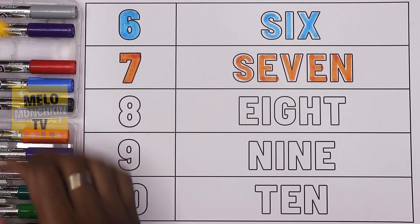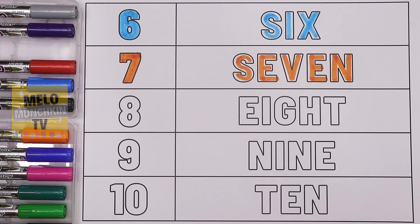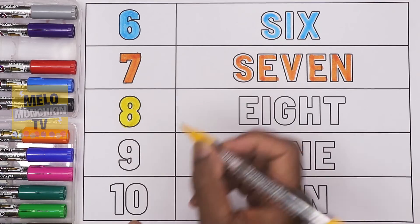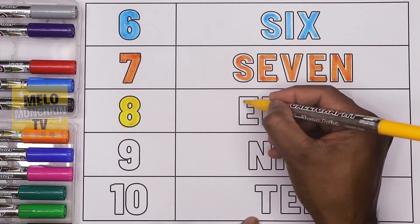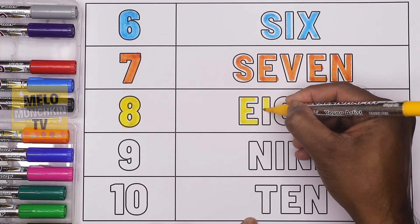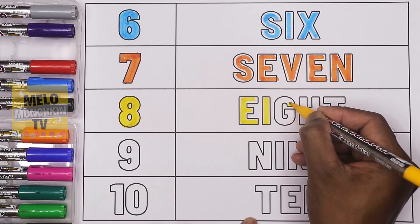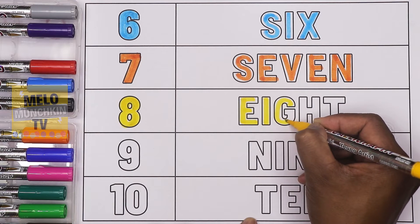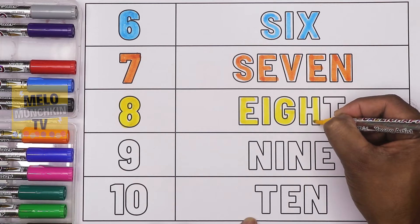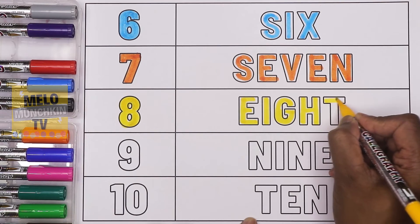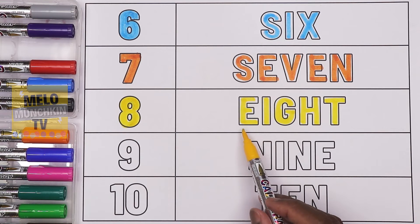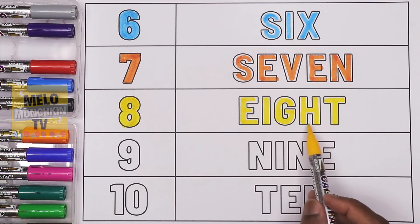Now, again I'll take yellow color to write number eight. This is number eight, and the spelling is E-I-G-H-T. Eight.